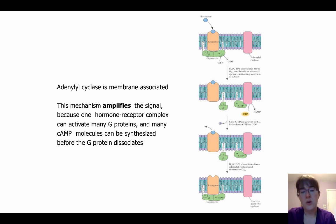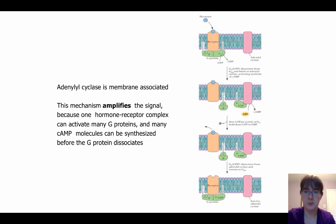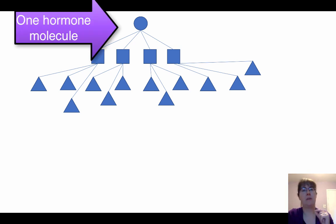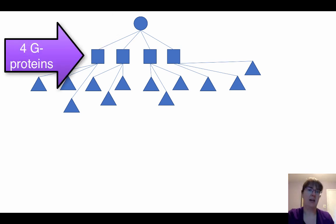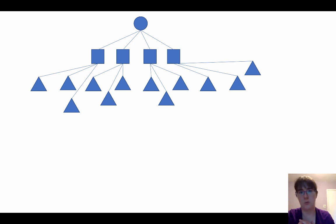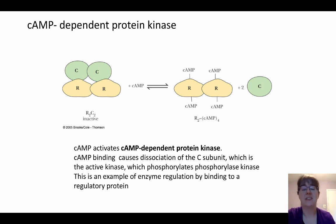This mechanism amplifies the signal: one hormone-receptor complex can activate many G proteins, and many cAMP molecules can be synthesized before the G protein disassociates. The hormone binds the receptor, which is coupled to G proteins, activating them, which then activates adenylyl cyclase to convert ATP to cAMP. One hormone signal affects multiple things inside the cell — you may have only one molecule of glucagon, but it affects multiple downstream targets, creating a cascade effect where the signal is seen throughout the cell simultaneously.